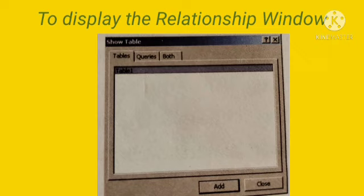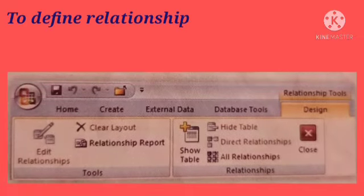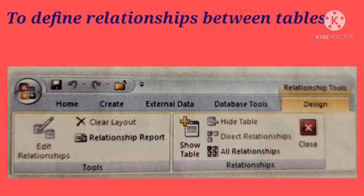The Relationships window is displayed along with the Show Table dialog box. To define relationships between tables, double-click on the names of the tables that you want to relate, and then close the Show Table dialog box. Second, drag the field that you want to relate from one table to the related field in the other table.